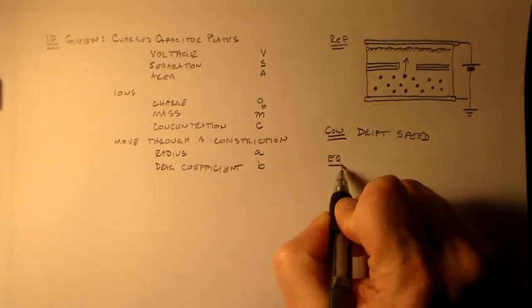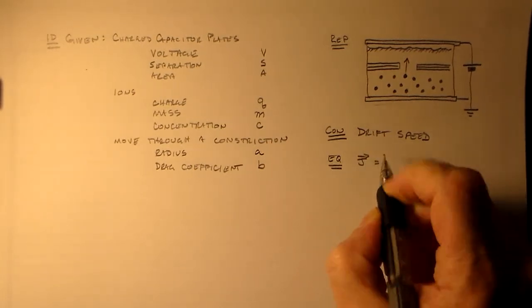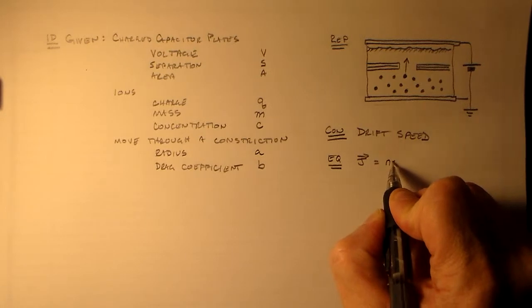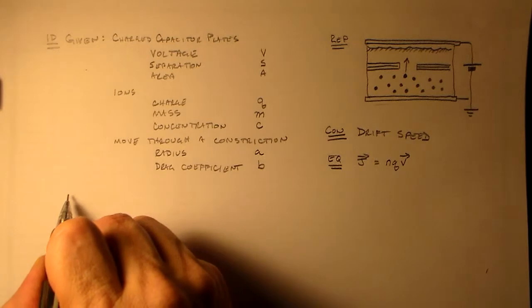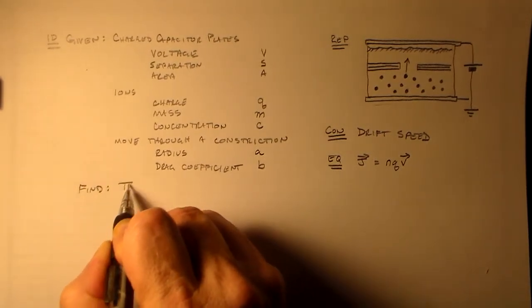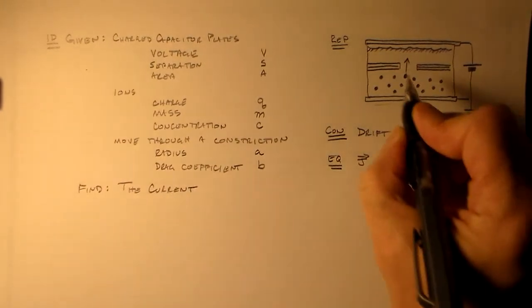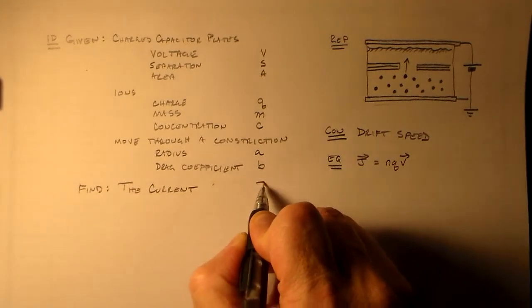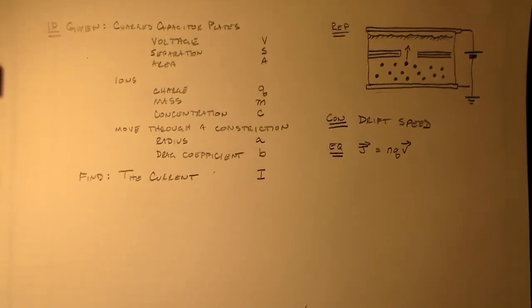So, using the drift speed we'll be able to find the current. And that should be sufficient. Recall that we had something going on like J is equal to NQV. Now we'll want to find the current going through this detector that we actually measure. So, we'll call that I. We'll get some I and we'll want to relate it to this concentration C. That's our goal technologically.